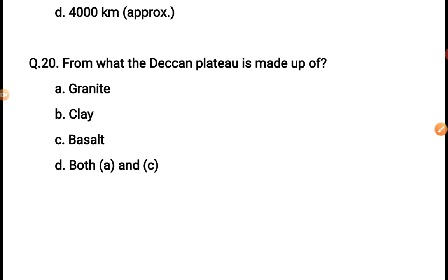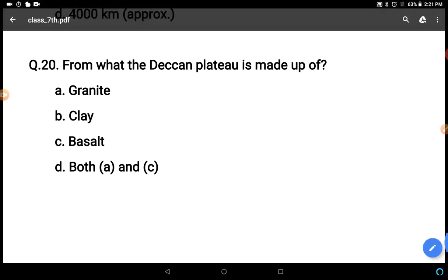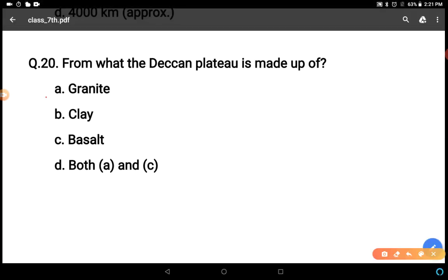Last and final question: from what the Deccan plateau is made up of? Granite, clay, basalt, both A and B. Granite takes the form after the formation of intrusive rocks under the earth surface, and basalt after the formation of extrusive rocks. When molten magma takes the form of igneous rocks outside of the earth, on the earth surface - Deccan plateau is made up of basalt. This is the correct answer.